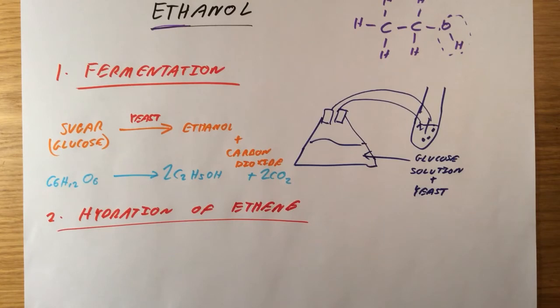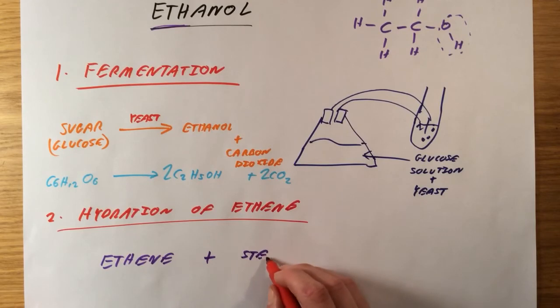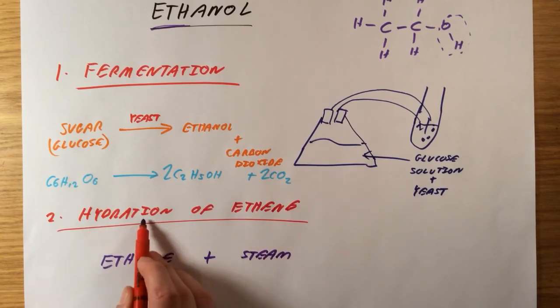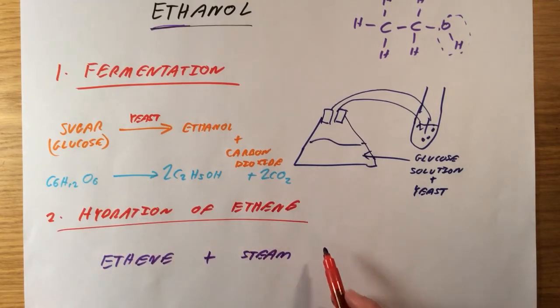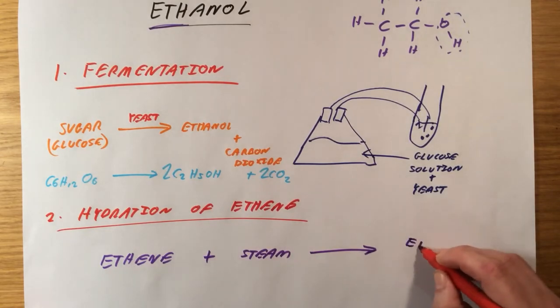And all we have to do to do this is react ethene with steam. Hydration implies adding water. We do need to get it quite hot, which is why the water is going to be in the form of steam. And we add water across the double bond in ethene, and we get ethanol.